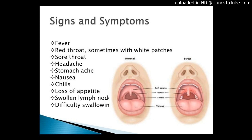Sometimes group B strep bacteria can cause urinary tract infections, or UTIs, also called bladder infections, which can also be diagnosed in the lab with a sample of urine.